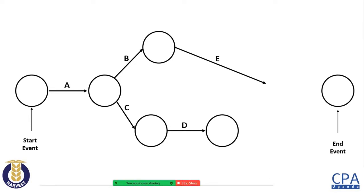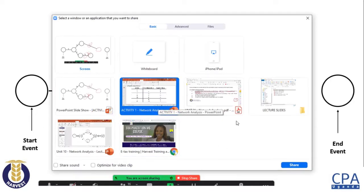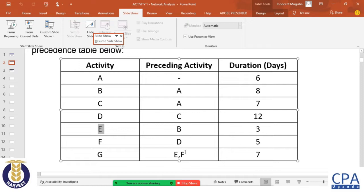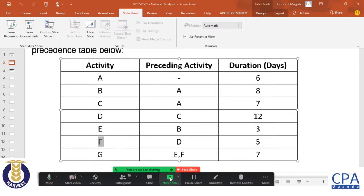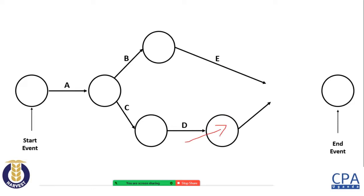I put a circle on D and also a circle on E, because I must indicate that I've completed both D and E. After D is done, I go back to the table — when we are done with D we start on F, so F has to come out of the circle at the end of D.